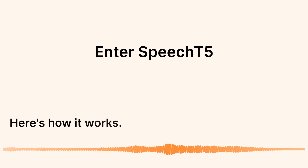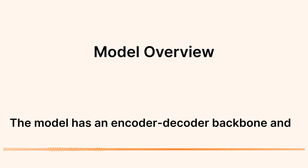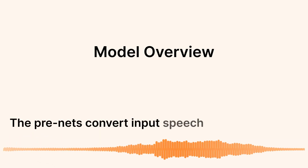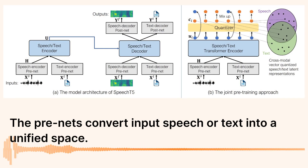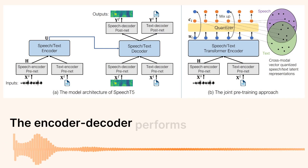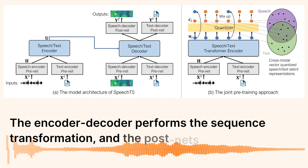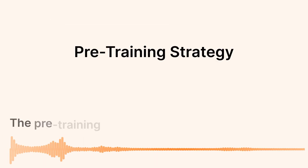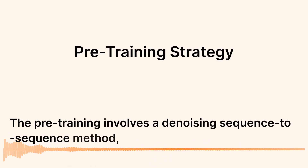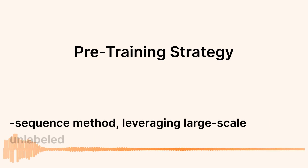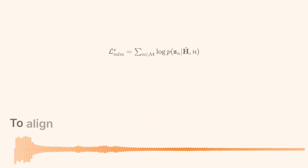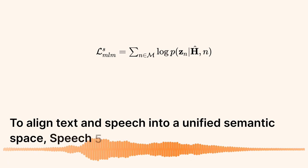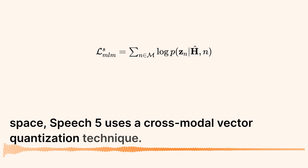Here's how it works. The model has an encoder-decoder backbone and six modal-specific pre-postnets. The pre-nets convert input speech or text into a unified space. The encoder-decoder performs the sequence transformation, and the postnets generate the output in the desired modality. The pre-training involves a denoising sequence-to-sequence method, leveraging large-scale unlabeled text and speech data. To align text and speech into a unified semantic space, SpeechT5 uses a cross-modal vector quantization technique.